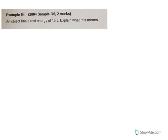Next question, 54. Alright, the last one. An object has a rest energy of 18. So that means that m₀ c squared is 18 joules. What does that actually mean?